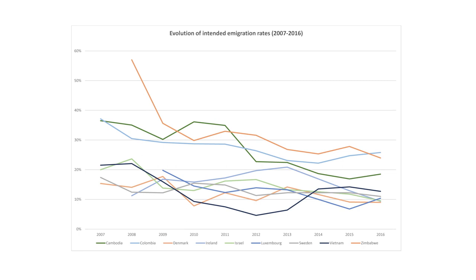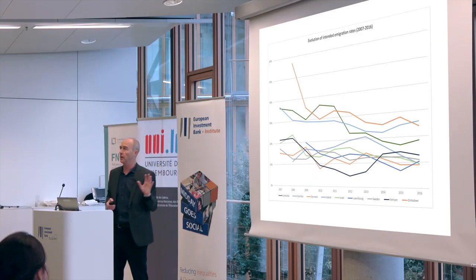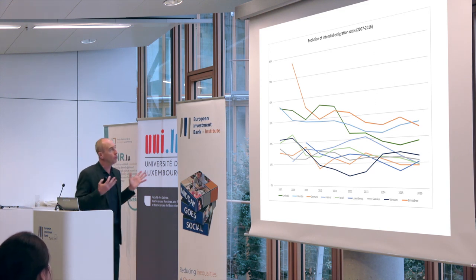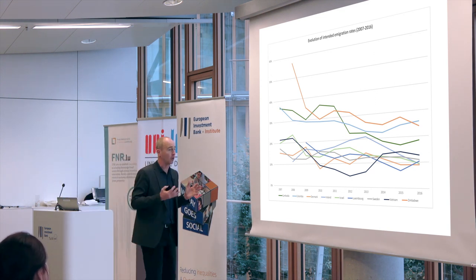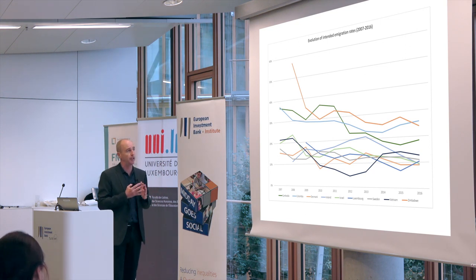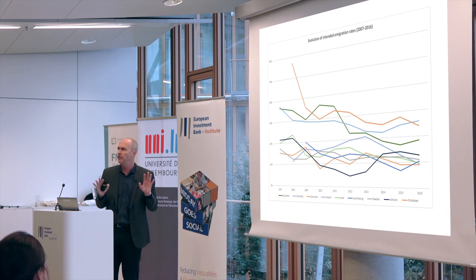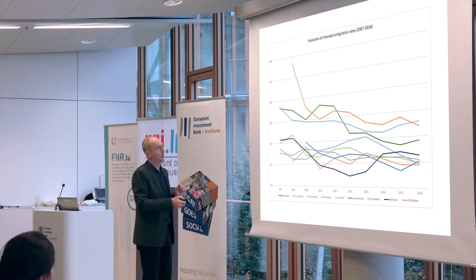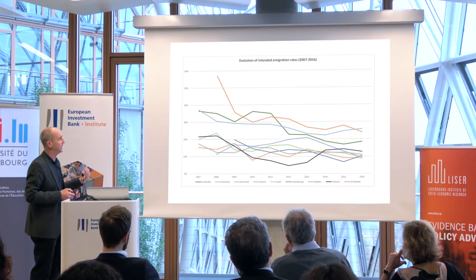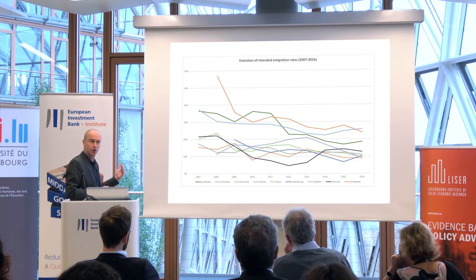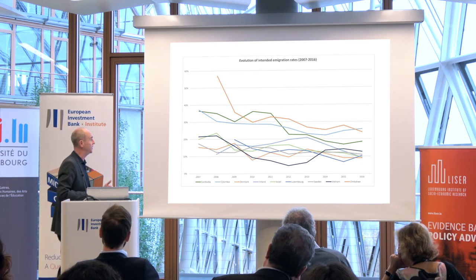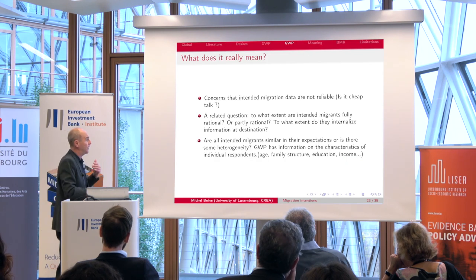Now, something I would like to emphasize is: what do these migration aspirations really mean? You might be concerned that intended migration data are not really reliable — people are asked whether they would like to leave their country and to pick a favorite destination, but they don't have to take any action with respect to that. A related question I'm going to tackle is: to what extent are intended migrants rational? When they pick a favorite destination, are they rational or partly rational?